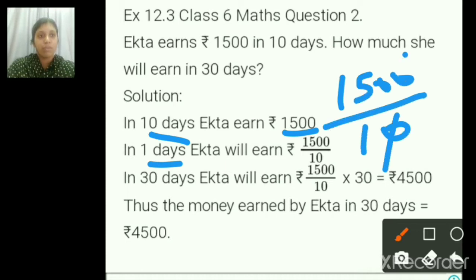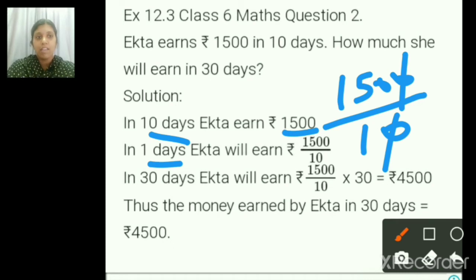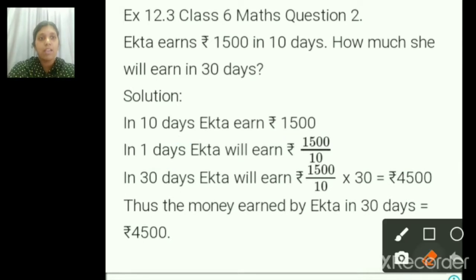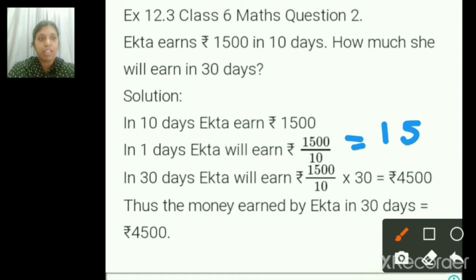So 1 0 from the numerator and denominator can be cancelled. Now we have 150 divided by 1, which is nothing but 150. So for 1 day she is earning 150 rupees.